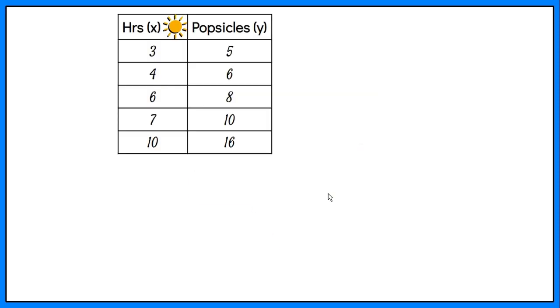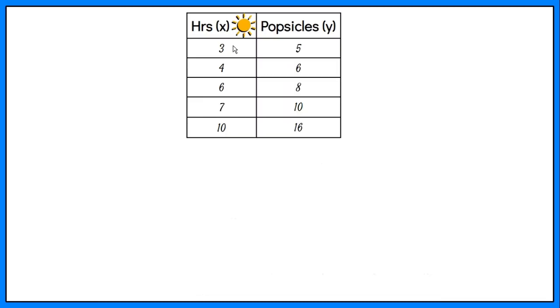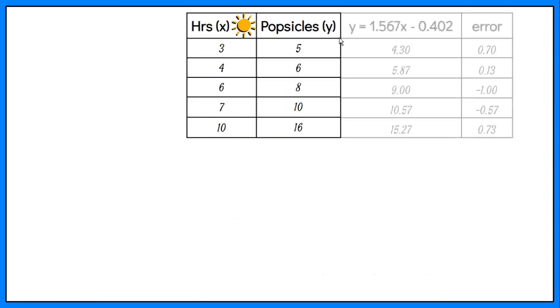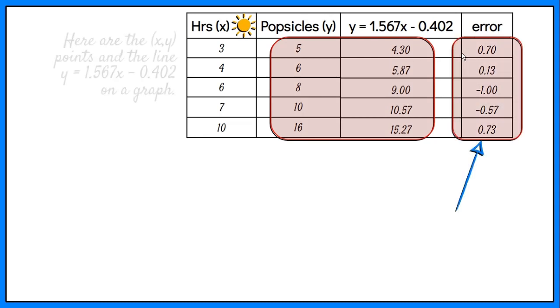Let's look at the graph of the x, y points based on the given problem. Let's also use the equation to draw the regression line. Here, we have two additional columns. Using the equation, we have the prediction for every x value. Comparing the given y and the computed y, we find the error value. At this point, let's see the data point with the regression line on the graph.